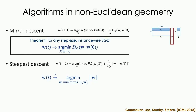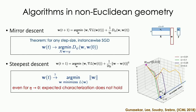For mirror descent, we can show that for any step size and instance-wise stochastic gradient descent, the solution will converge to a specific global minimizer which minimizes the Bregman divergence to the initialization. This would have been a natural guess from the gradient descent result, and it indeed holds true. Generalizing this aesthetically, we would expect that for steepest descent algorithms, we would get a solution minimizing the corresponding steepest descent norm. But we can easily construct counterexamples showing that this doesn't happen.